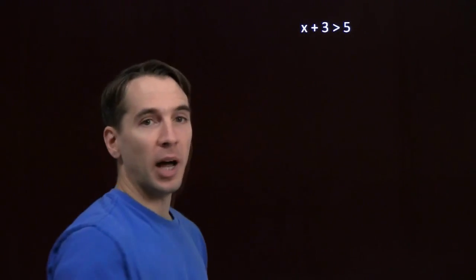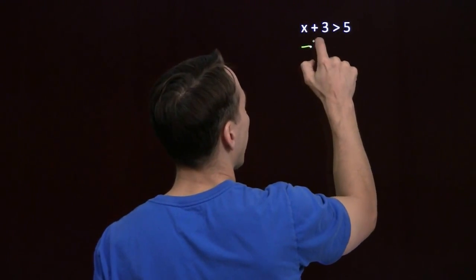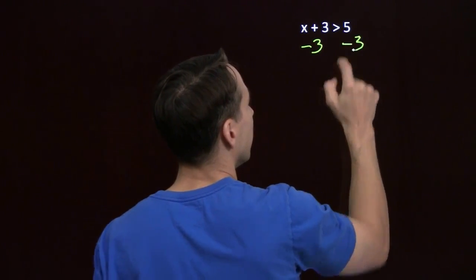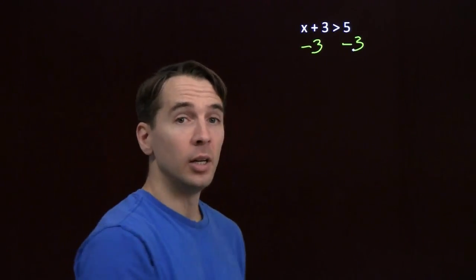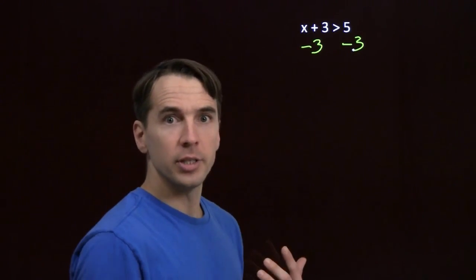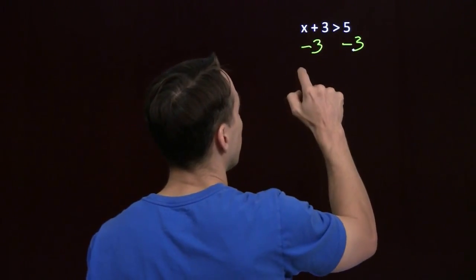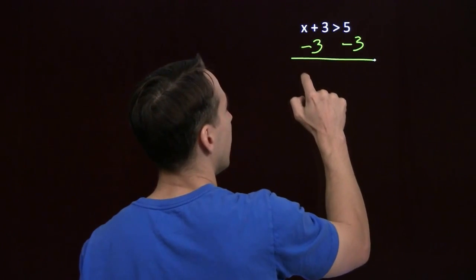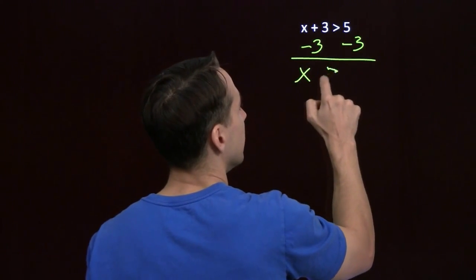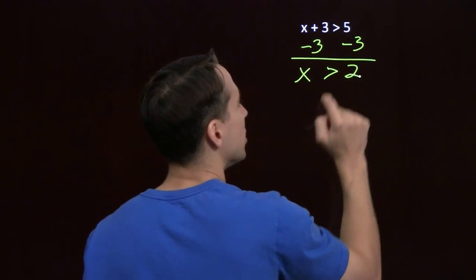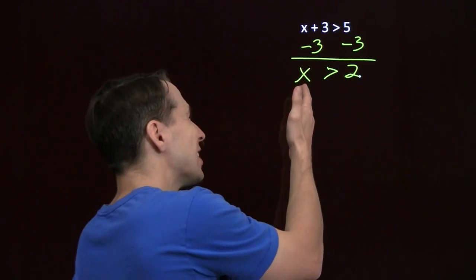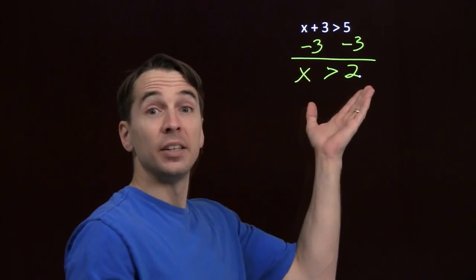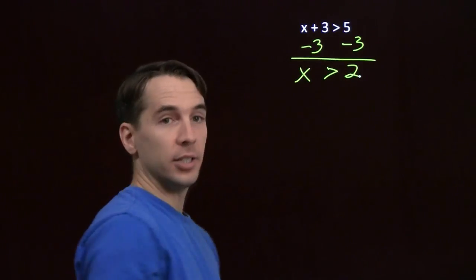Here, it's the 3 that's bothering the x. We're just going to subtract 3 from both sides to isolate x. We can do that because if you subtract the same thing from both sides of an inequality, the larger side stays larger than the smaller side. Subtracting 3 cancels out on the left, and we're left with x is greater than 5 minus 3, which is 2. Every value of x greater than 2 works in this inequality.